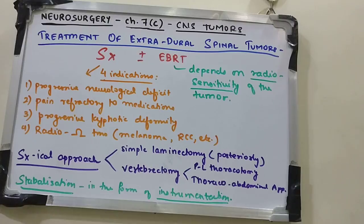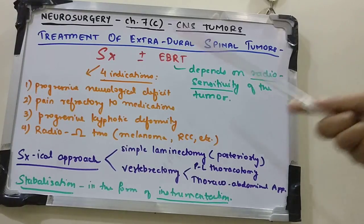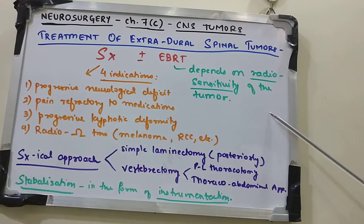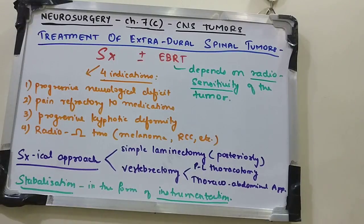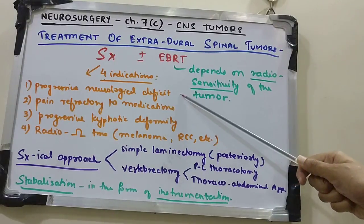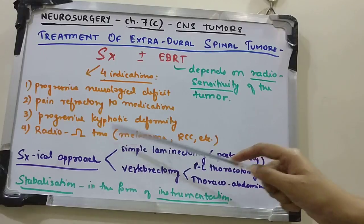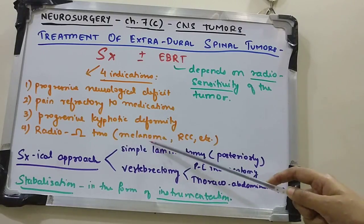The mainstay of treatment for extradural spinal tumors is surgery plus or minus EBRT (external beam radiotherapy), given based on the radiosensitivity of the tumor. There are four indications for surgery: progressive neurological deficit, pain refractory to medications, progressive kyphotic deformity, and if the tumor is radio-resistant — such as melanoma or RCC.